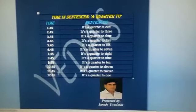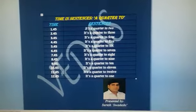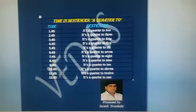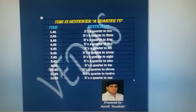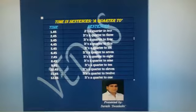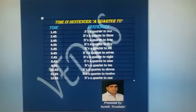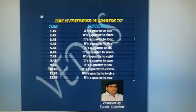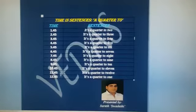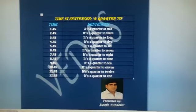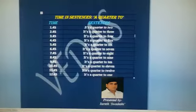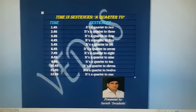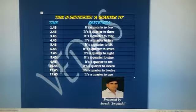When it is 4:45, we say it's a quarter to five. When the time is 5:45, it is called a quarter to six. When the time is 6:45, we say it's a quarter to seven. When the time is 7:45, it is called a quarter to eight. When the time is 8:45, it's a quarter to nine.